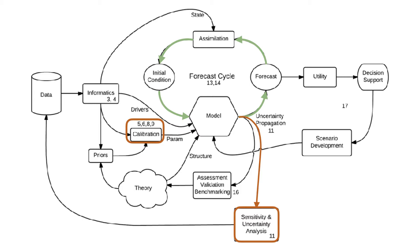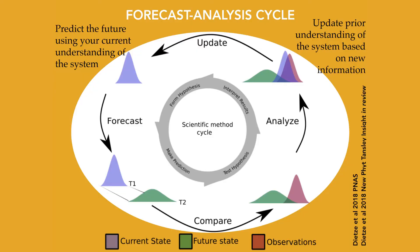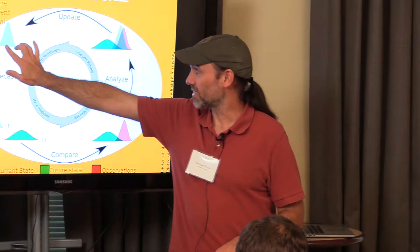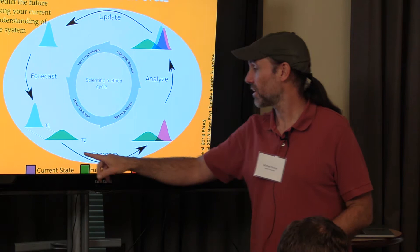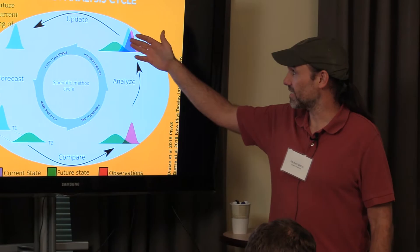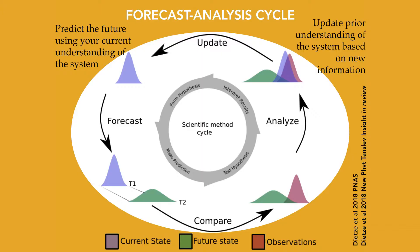We've talked about calibration and propagating uncertainty into forecasts. Now we have the idea: we've made the forecast, new observations become available, and we want to assimilate that new information back in—to have additional constraints on the state of the system that we can then use to update our forecasts. We're going to focus on what I'll call the forecast-analysis cycle: this iterative process of predicting the future given our current understanding, projecting uncertainty from time one to time two, comparing to observations, and doing a statistical analysis to update that state.